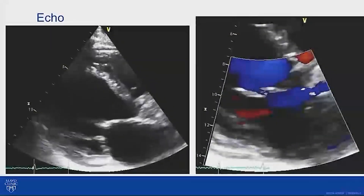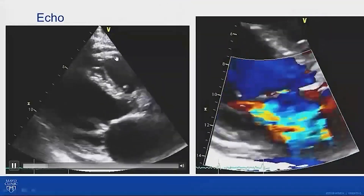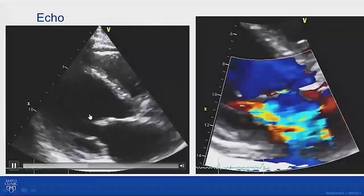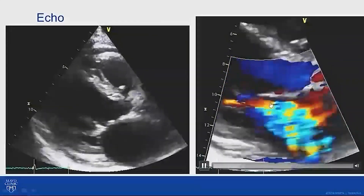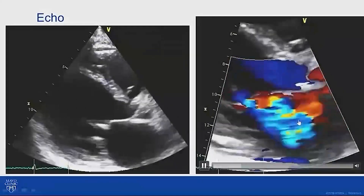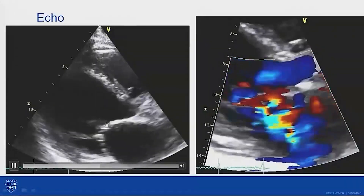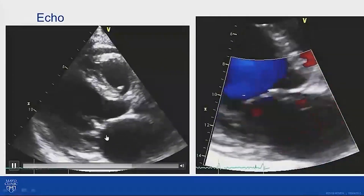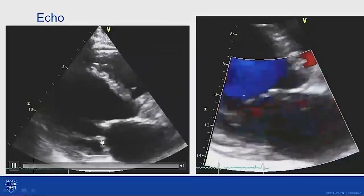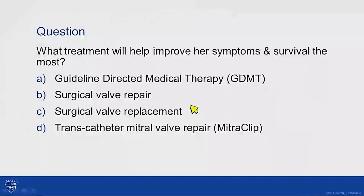Looking at her transthoracic echo on the left side, going from top to bottom we see right ventricle, left ventricle, mitral valve, and the left atrium. On the right side of the screen in color, we can see a lot of flow going backwards into her left atrium, consistent with her mitral regurgitation. The leaflets aren't coming quite back to the annular plane — they're tethered and apically displaced, which is characteristic of secondary mitral regurgitation.